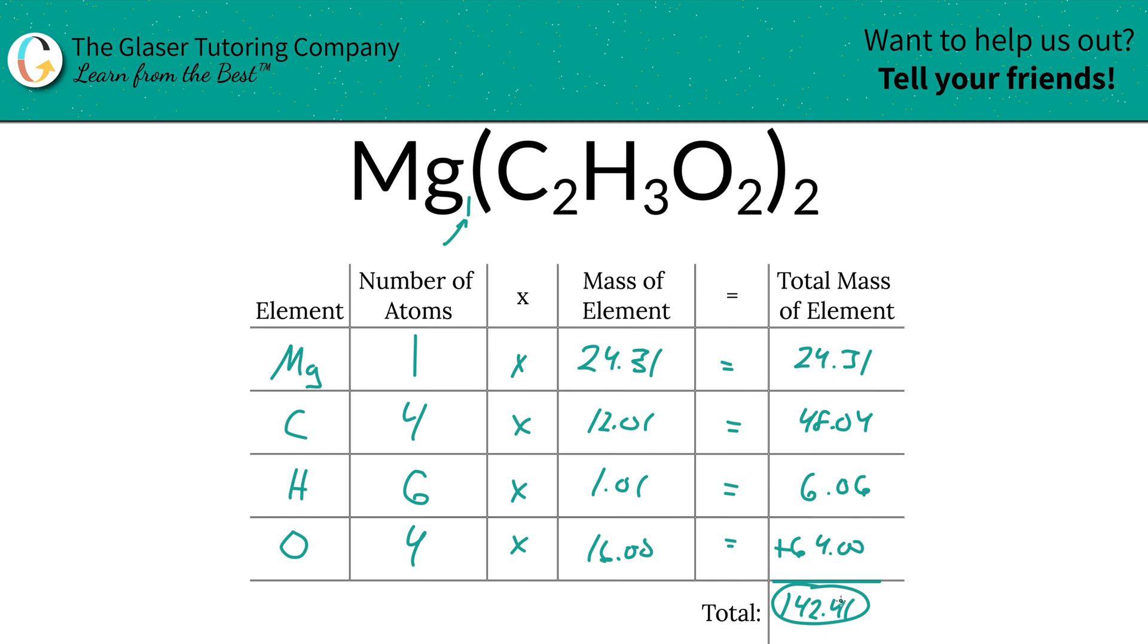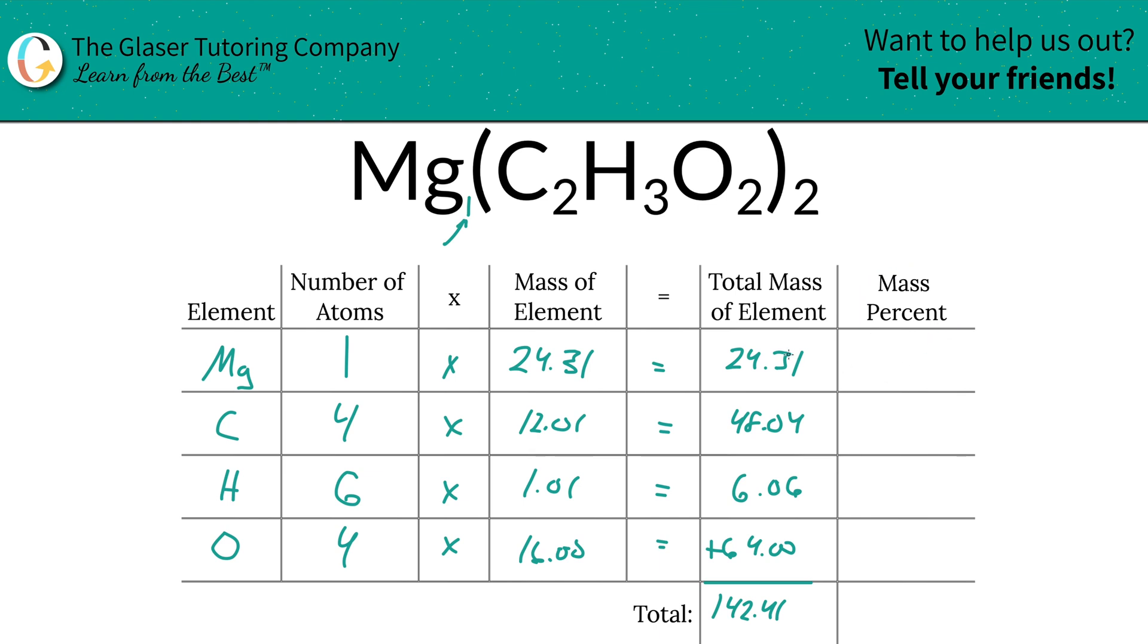Now that we have that in hand, we're going to do the percents. I'm going to add a column to the table. To find the mass percent of magnesium, we're going to take the total mass of the magnesium. That's why the table helps us with the structure. We know where to look. Then we're going to divide it by the total mass of the entire compound, hence why we had to calculate that first. Now this is a simple percent calculation, basically part over whole times 100.